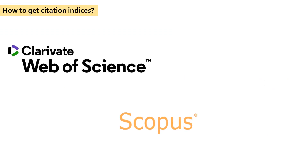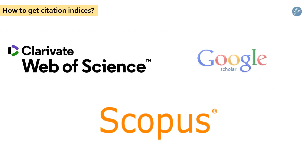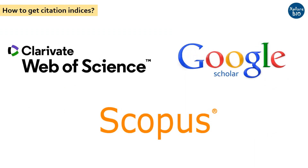There are several websites such as Web of Science, Scopus, and Google Scholar where you can find information about these indices. However, results may vary depending upon the criteria of citation count used by each platform.